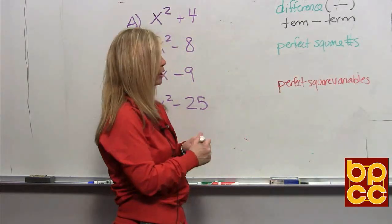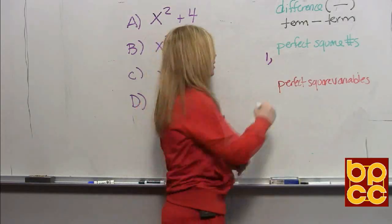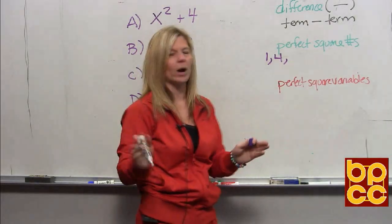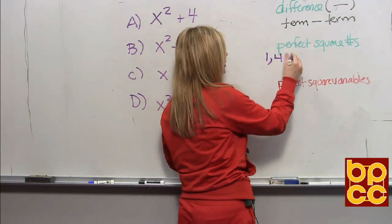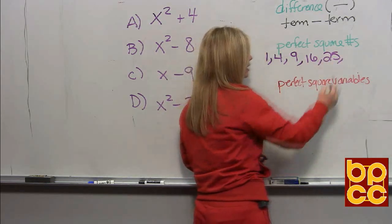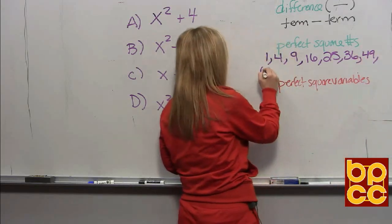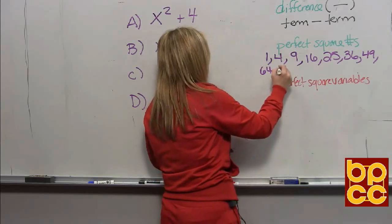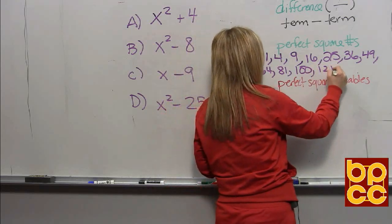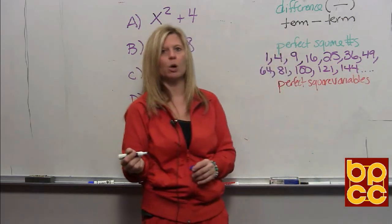The numbers in math that are perfect squares are numbers times themselves. One is a perfect square — it's one times one. Four is two times two. We're going to list the first twenty. Nine is three times three. Sixteen is four times four. Twenty-five is five times five. Thirty-six is six times six. Forty-nine is seven times seven. Sixty-four is eight times eight. Eighty-one is nine times nine. A hundred is ten times ten. One-twenty-one is eleven times eleven. One-forty-four is twelve times twelve, and so on.